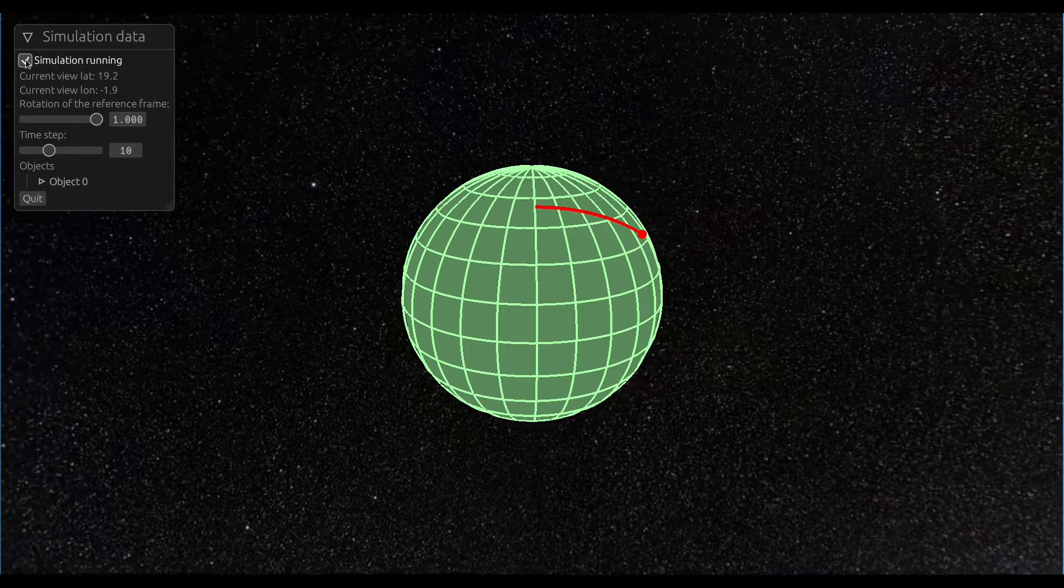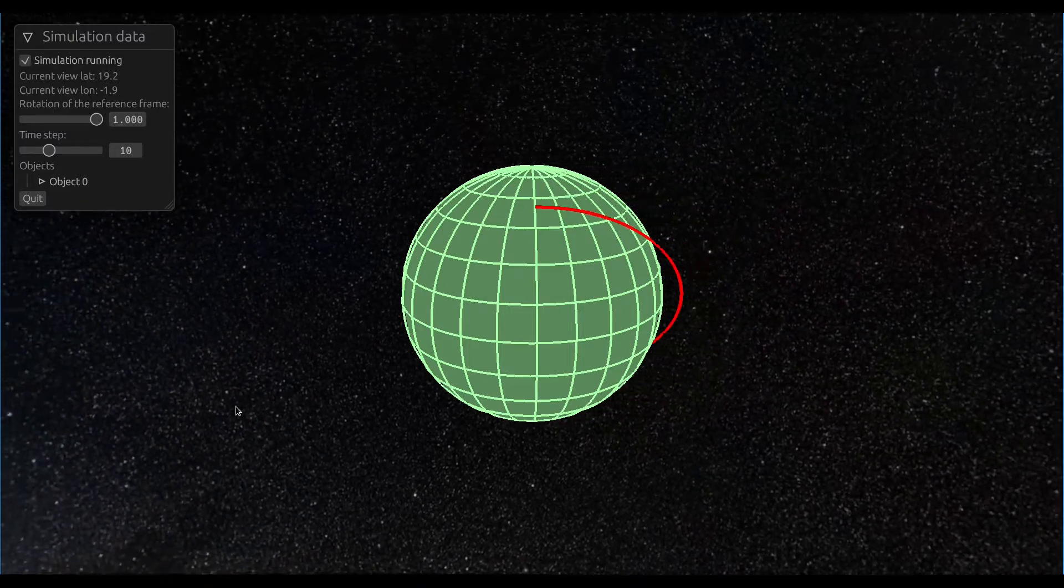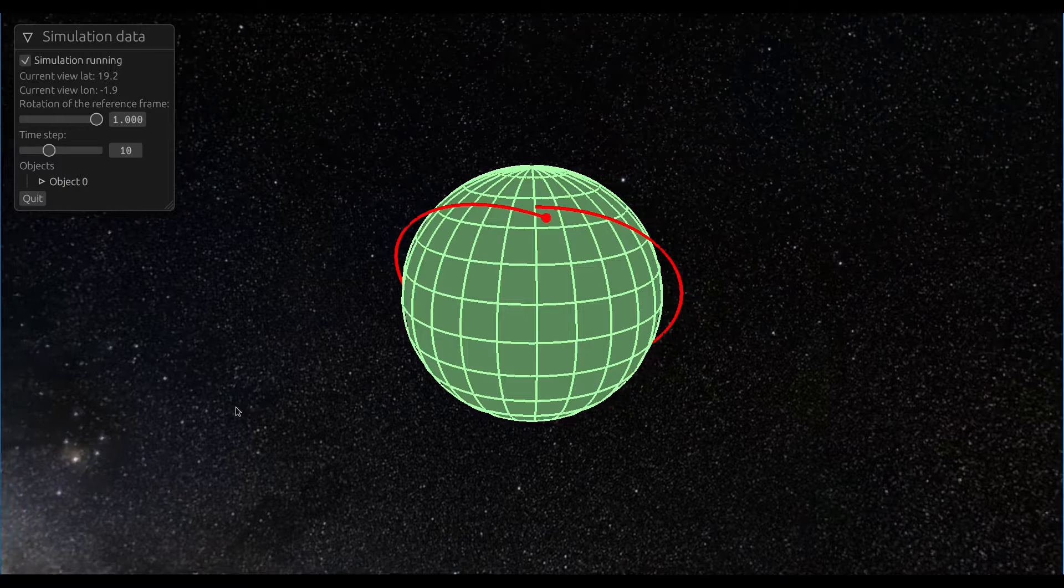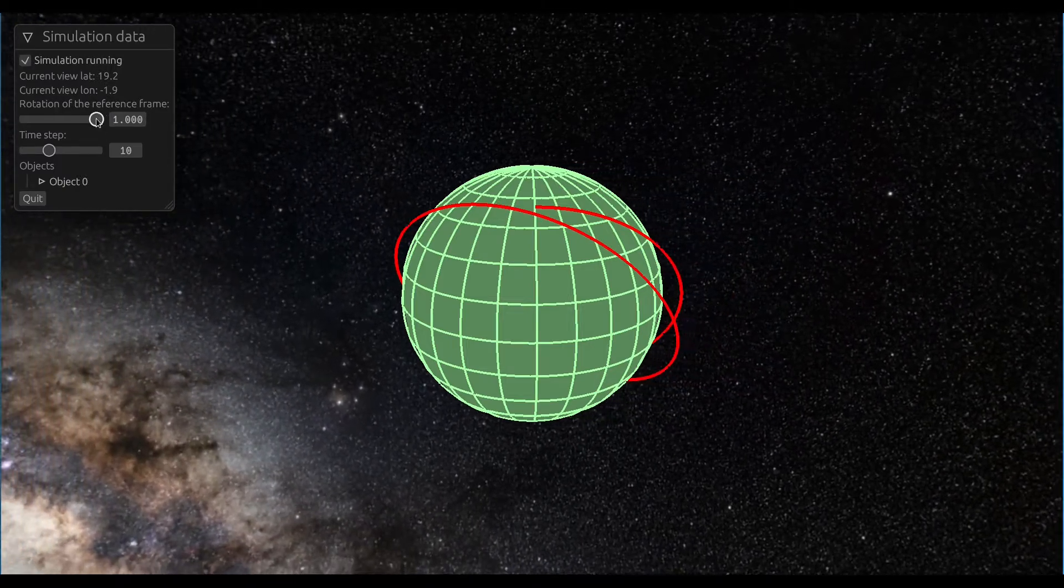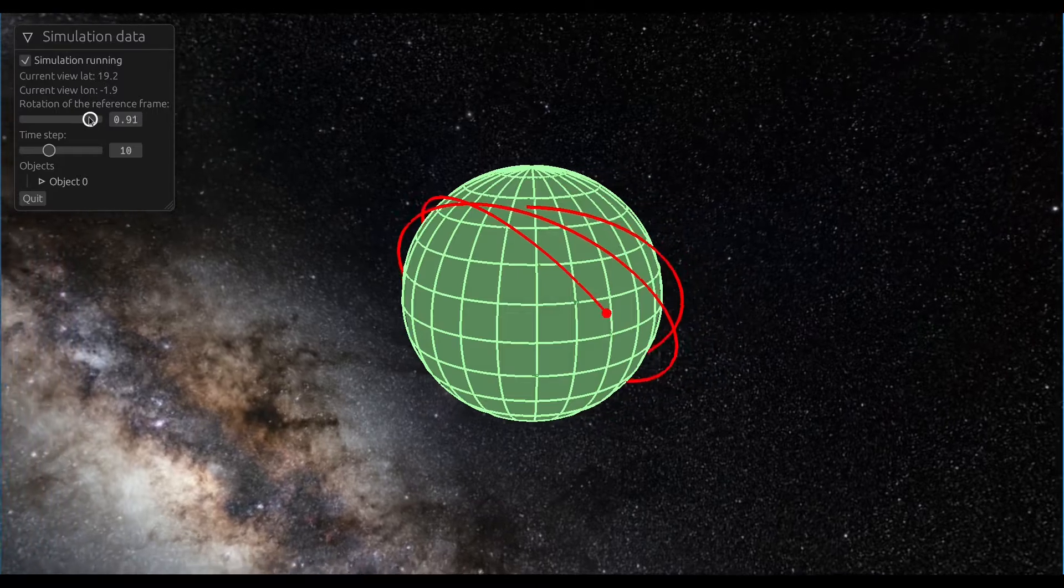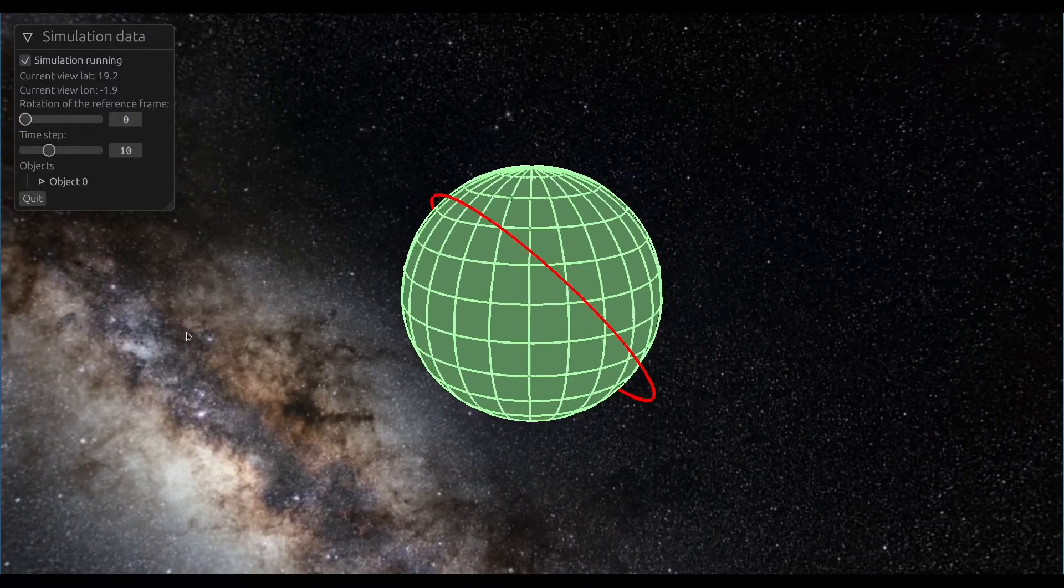It can, for example, simulate an orbiting satellite and show you its track in a non-inertial frame of reference, as well as in an inertial frame of reference.